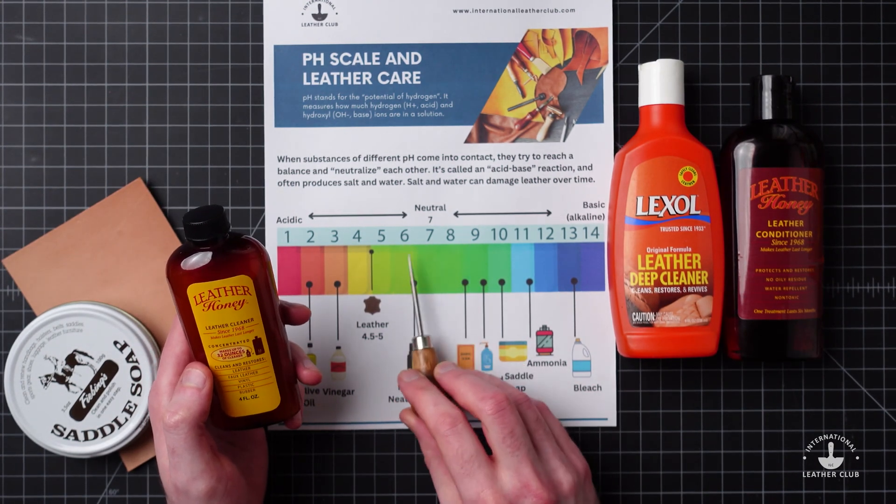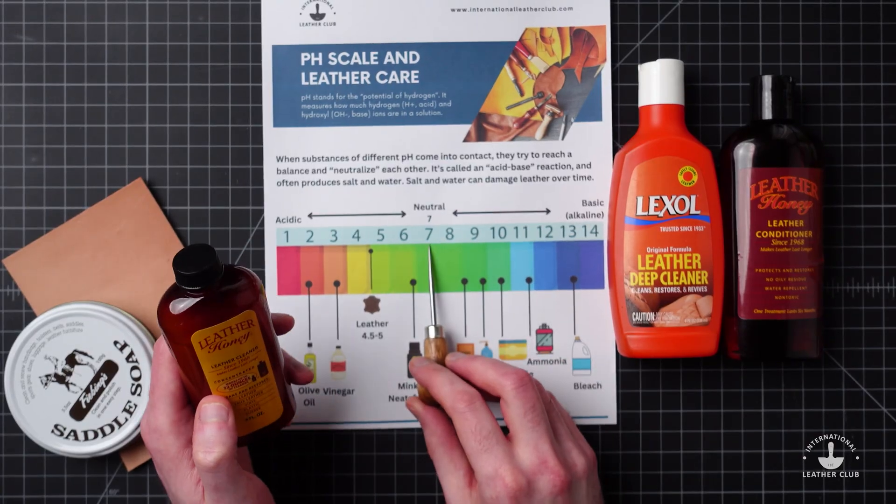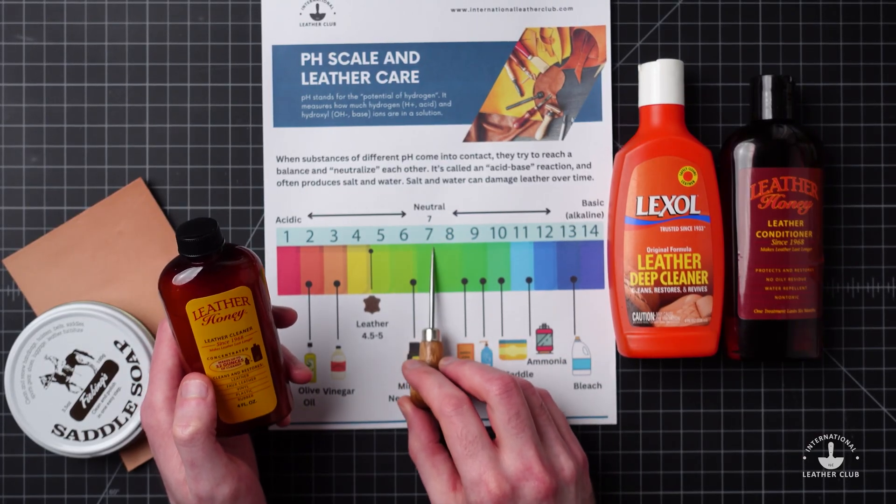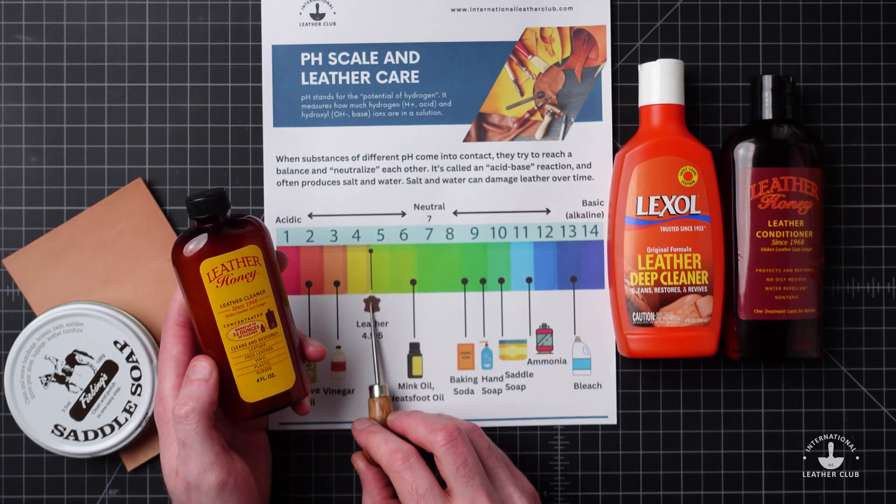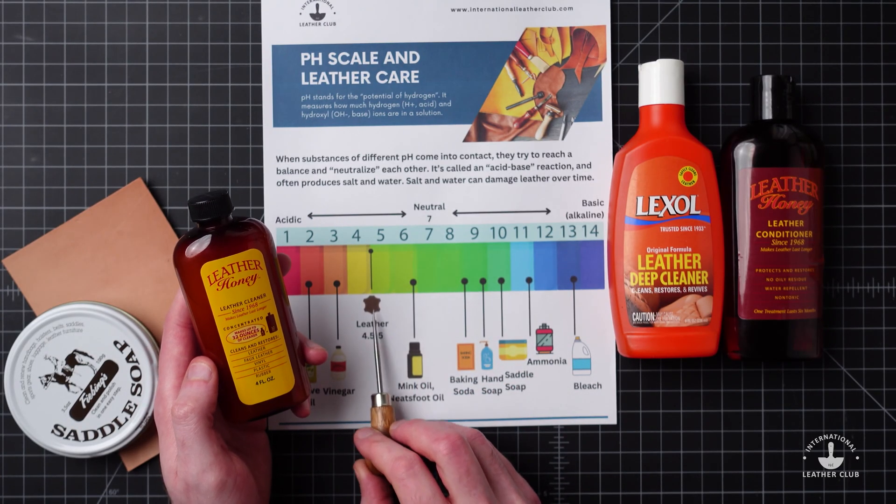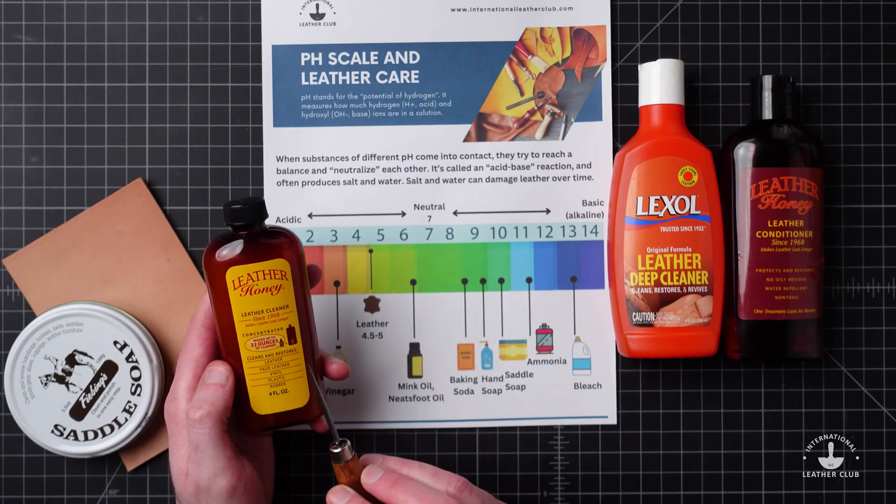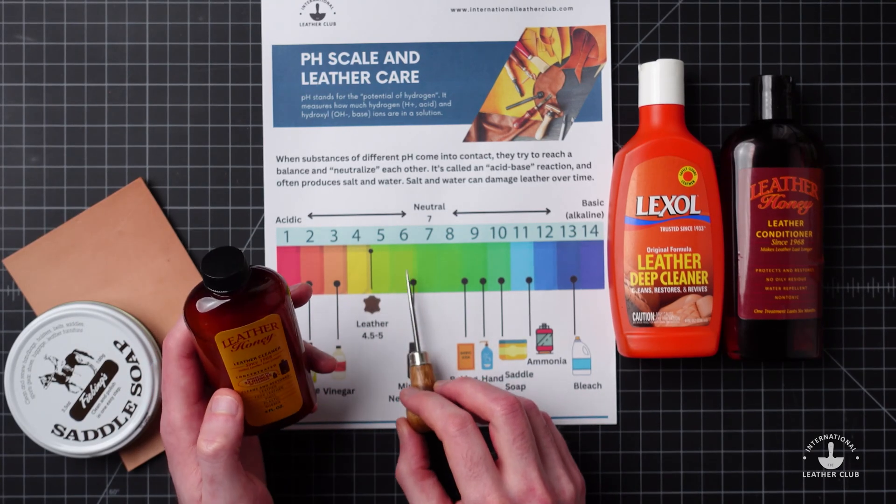On this scale, if it's a neutral 7, it's not going to have much of an impact. Or if you are right around the leather 4.5 to 5, you will also not have much of an impact. Look for something that either has the pH of around leather or is neutral around 7.